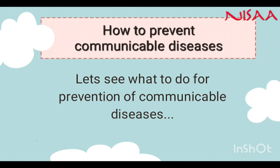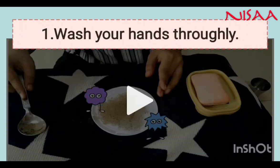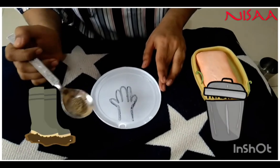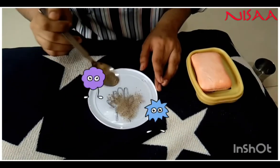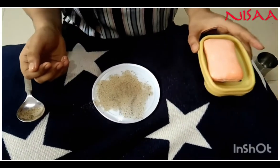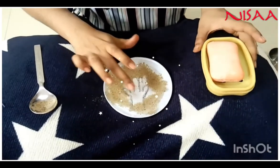Prevention of communicable diseases — what can be done to avoid the spread of communicable diseases? Number 1: We must wash our hands thoroughly when we come back home from school, playground, market or any other place. When you touch any dirty object, all these germs get on your hands. All you need to do is take a soap and wash your hands, and all the germs will go away.